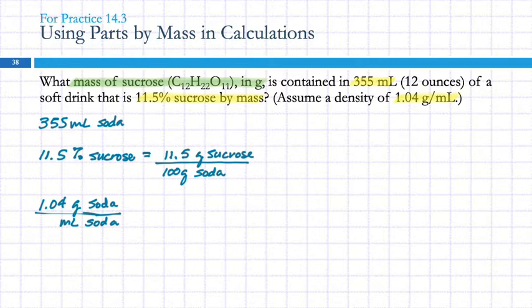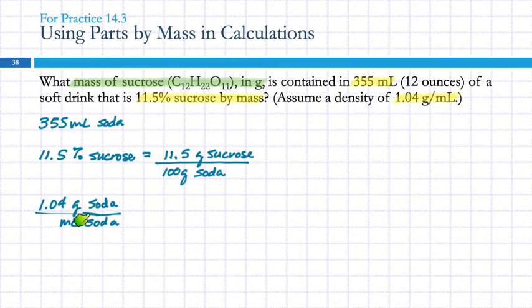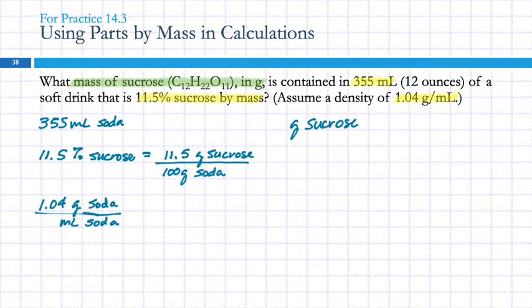It's helpful to label these because we've got grams of sucrose and grams of soda, and we don't want to get them mixed up. A lot of these problems end up being dimensional analysis. We're trying to find grams of sucrose — we have to figure out which of these do I start with. This looks like a conversion factor, and so does that. This one cannot be a conversion factor because it's just a volume, so that's the one we start with.